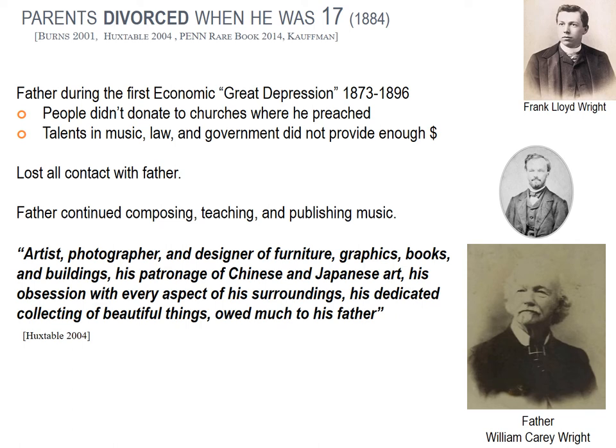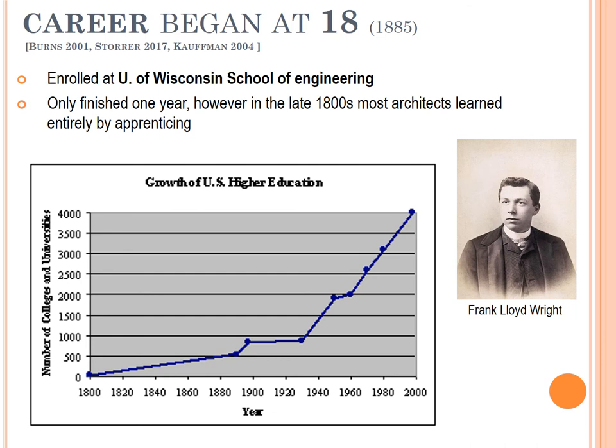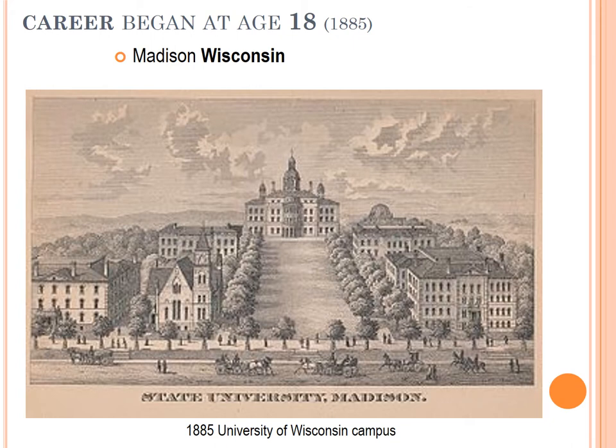Frank Lloyd Wright attended the University of Wisconsin when he was 18 years old for one year in engineering; they did not have an architecture program. Going to college was not as common then as it is today. His father did have a bachelor's and master's from Colgate University, but that was a rare thing at the time. FLW had a mentor there — an engineering professor who also had an interest in architecture — named Alan Conover.